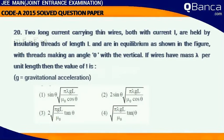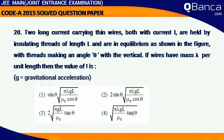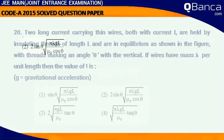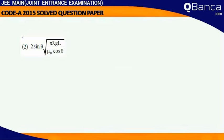Two long current carrying thin wires both with current i are held by insulating thread of length L and are in equilibrium as shown in the figure with thread making an angle theta with the vertical. If wires have mass lambda per unit length then the value of I is answer 2 sin theta square root of pi lambda GL by mu naught cos theta.